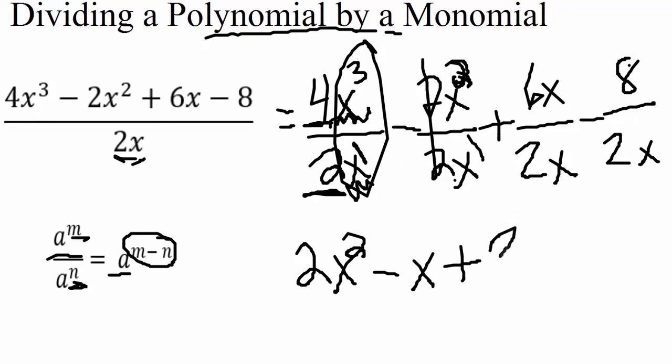Plus 6 divided by 2 is 3. And here our x terms are going to cancel out. And drop down the minus sign.